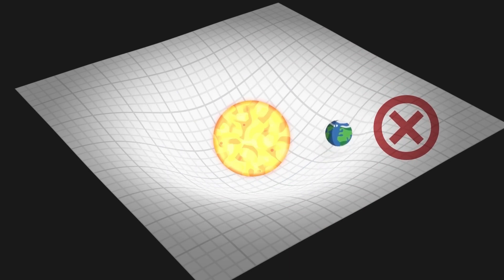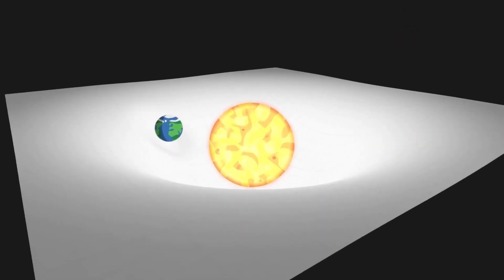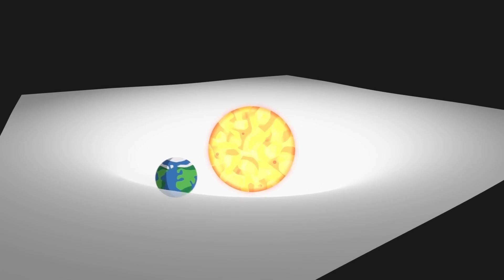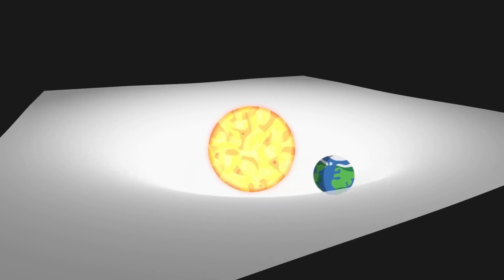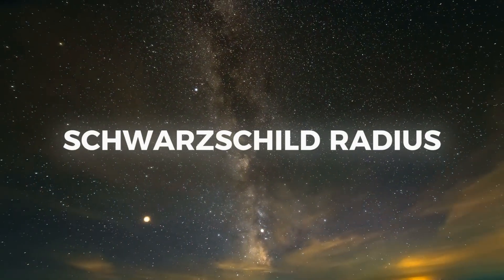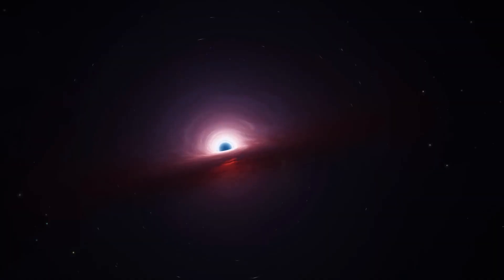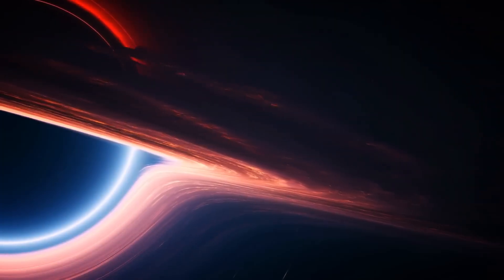Despite the challenges of wartime conditions, Schwarzschild managed to solve Einstein's field equations and discovered a solution that described the gravitational field around a point mass. This solution included what we now call the Schwarzschild radius, the critical radius at which a massive object would become a black hole.